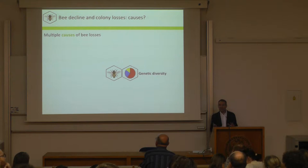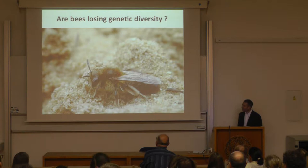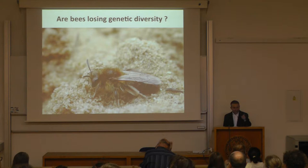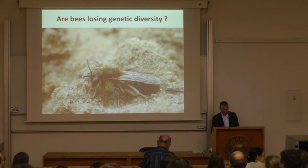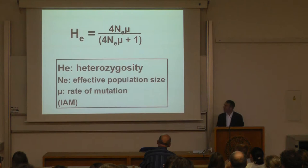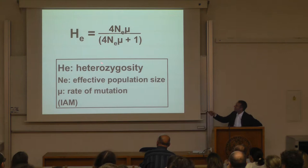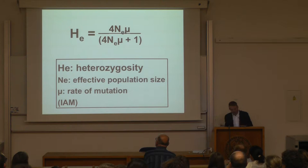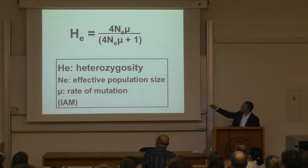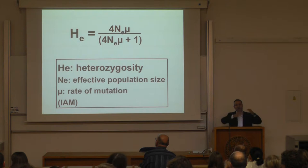First, I'll talk about genetics and genetic diversity. The idea is that reduced genetic diversity may impact upon the health of populations of wild bees. Are bees losing genetic diversity? Genetic diversity can be measured in various ways; the easiest using genetic markers is heterozygosity. Under the infinite alleles model, there's a simple relationship between heterozygosity and effective population size — the larger the effective population size, the higher the heterozygosity.